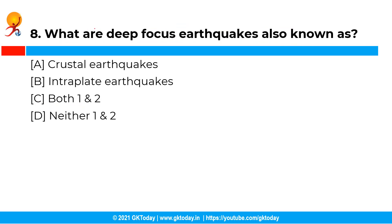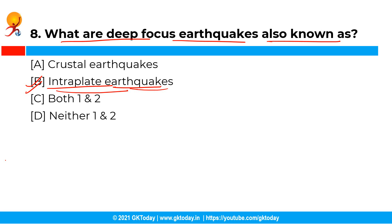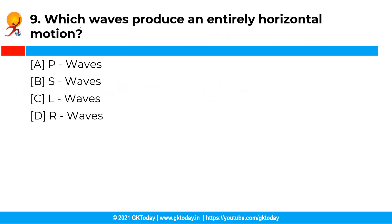The next question is: what are the deep focus earthquakes also known as? You have the following options and the correct answer is option B, that is intraplate earthquakes. Deep focus earthquakes are earthquakes deeper than 70 km and they occur in the pattern of Benioff zones. They are triggered by collision between two plates, hence they are called intraplate earthquakes.